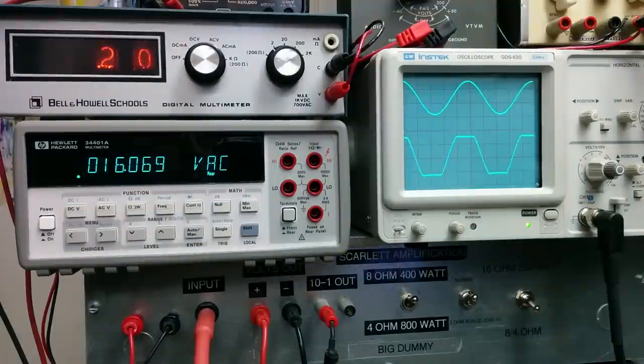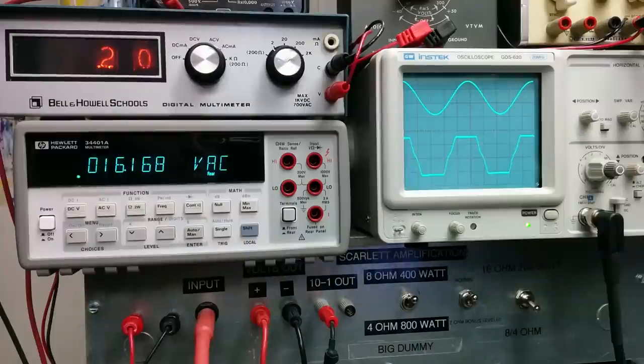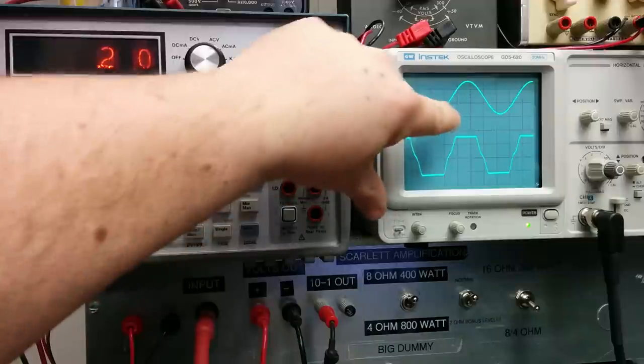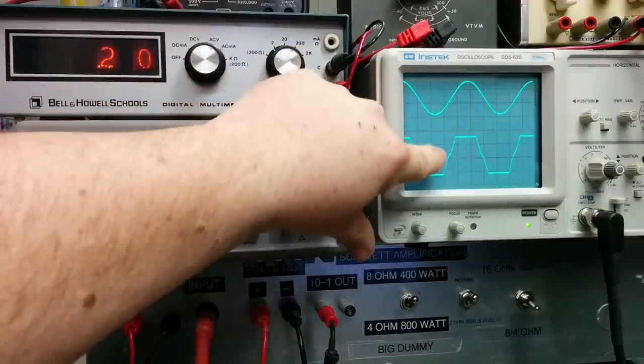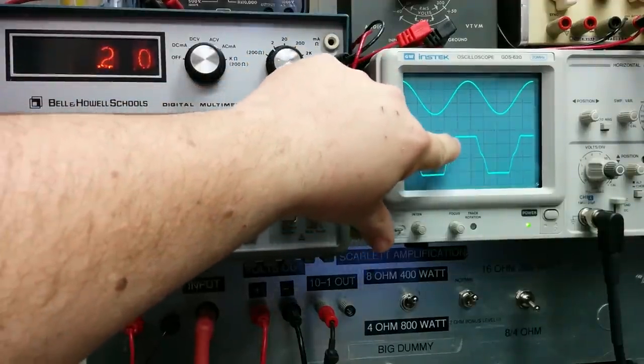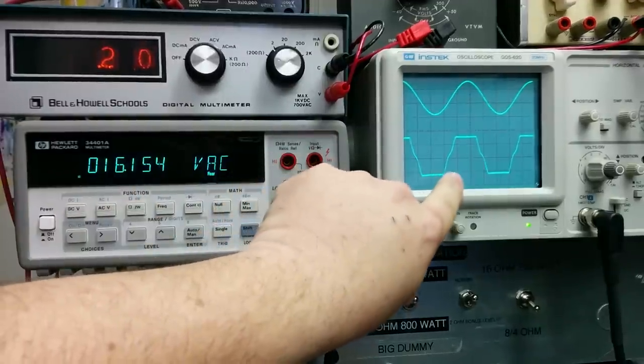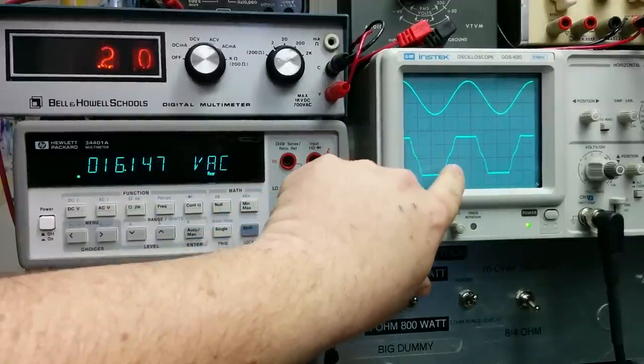Now here's where it starts to get interesting. Notice the sides as we clip it more—see that little notch right there? That's called the crossover notch. That's also a type of distortion.